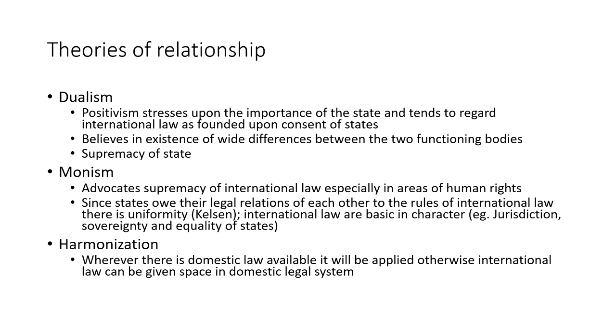The second theory is monism. 'Mono' meaning single — once you accept an international obligation or international law, it can become part of the domestic legal system directly. Monism advocates the supremacy of international law, especially in areas of human rights. Proponents of this theory believe in the supremacy of international law particularly in matters such as the Universal Declaration of Human Rights, the International Covenant on Civil and Political Rights, and the International Covenant on Economic, Cultural and Social Rights.